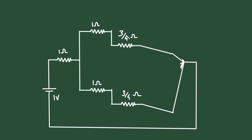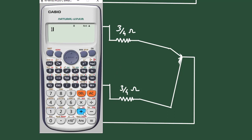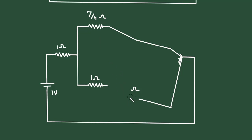Now again here we can see this 1 ohm and this 3/4 ohm are connected in series. So this becomes a single resistor of 1 plus 3/4, which is 7/4 ohm. Similarly, the other combination also gives 7/4 ohm, so we now have two resistors each of 7/4 ohm.